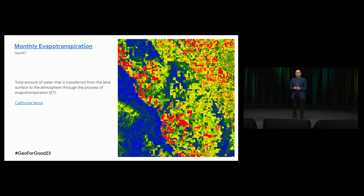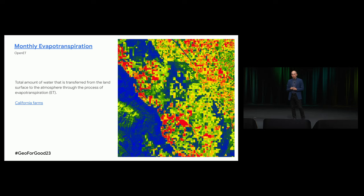OpenET — thank you, OpenET. They have worked for years producing very important datasets for agriculture. These are Central Valley California fields which evaporate a lot of water. Blue areas where there are no fields show much less evapotranspiration. This reminds us that there are huge problems with water in California, and this is very easy to see with OpenET datasets.